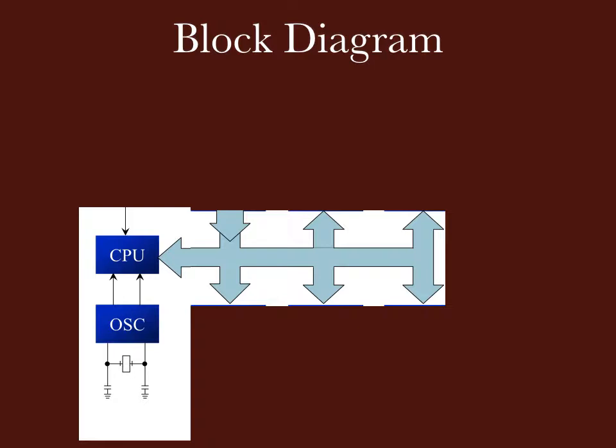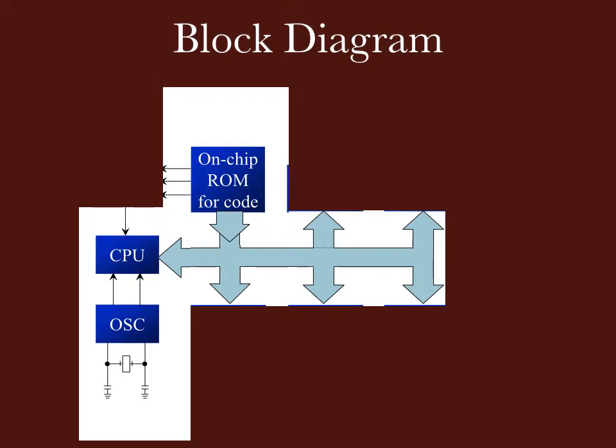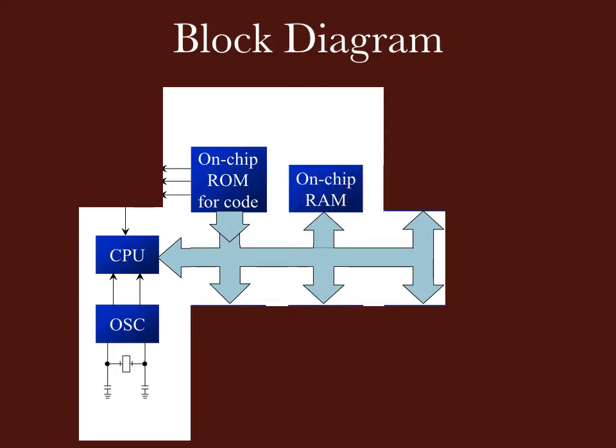Then, there is an internal bus in IC which is connected to IC's blocks. Now, we have an on-chip ROM. ROM stands for Read Only Memory. In the ROM, we have stored a program. That's why we call it code memory. It also has on-chip RAM, which stores the data, so RAM is also called data memory.